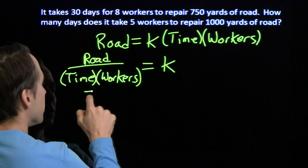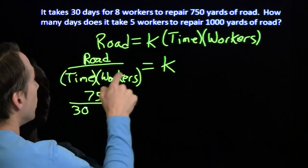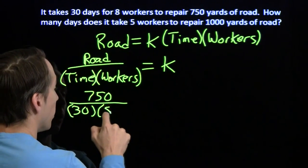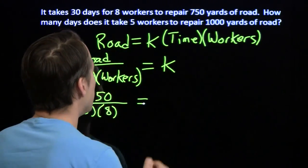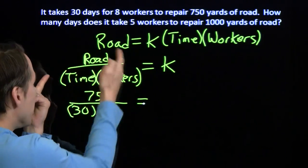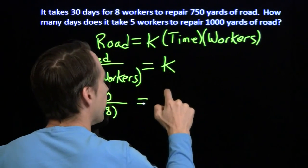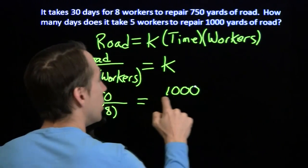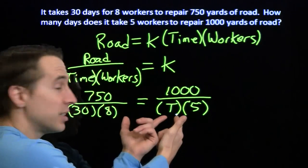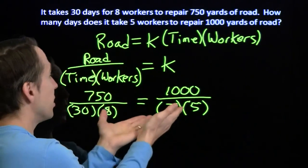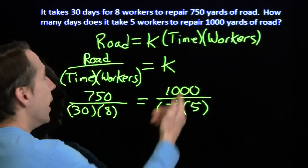I can use the data up here to figure out what that constant is. The amount of road is 750 yards, the amount of time is 30 days, and the number of workers is 8. Now, I could compute this constant, or I could realize I don't even have to — I can put in the new data as well. The new road is 1,000 yards, the number of workers is 5, and the time is what I'm trying to figure out — I'll call that t. Since this expression is constant, it has to be the same both before, when Lino was originally planning, and after, when they took his dudes away and expanded the project.